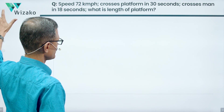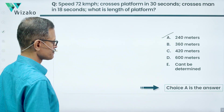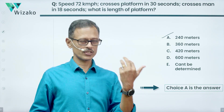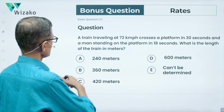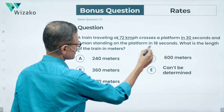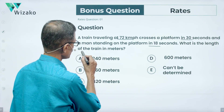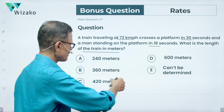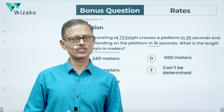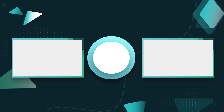The answer is 240 meters, answer option A. As mentioned, I've tweaked the question for a bonus: the train still travels at 72 km/h, crosses the platform in 30 seconds and the man in 18 seconds — but now find the length of the train. Solve this and post your answers in the comments. Best wishes for your GMAT preparation. Thank you.